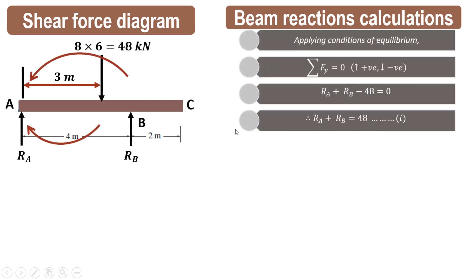Applying the conditions of equilibrium, the first condition is summation of forces in the y-direction equals zero. Upward forces are considered positive and downward forces negative. So Ra and Rb are positive (upward), and 48 kN is negative (downward). This gives Ra + Rb − 48 = 0, or Ra + Rb = 48 kN as our first equation.